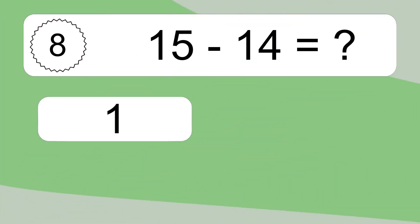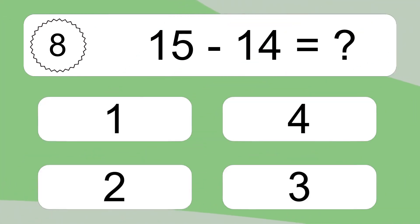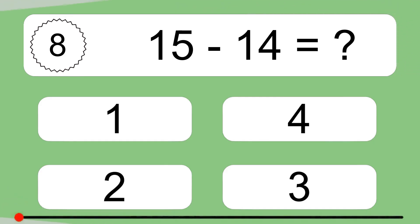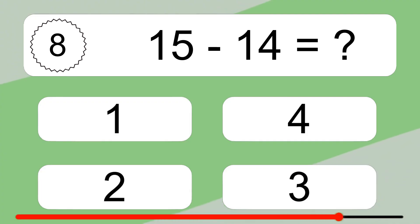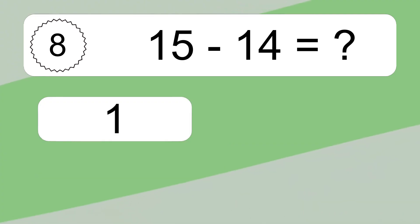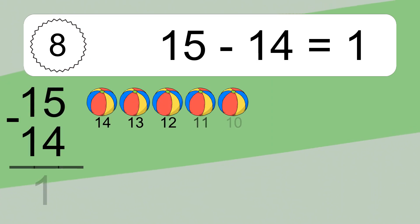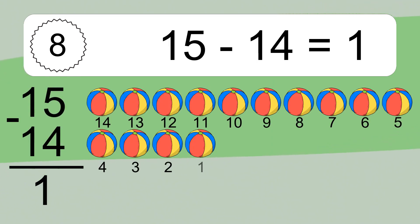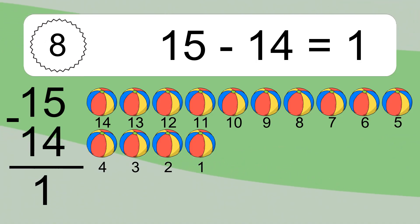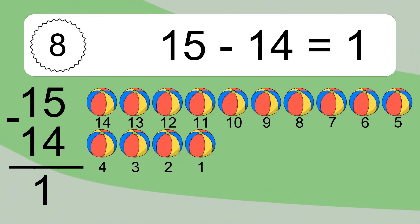15 minus 14 equals what? 15 minus 14 equals 1. Let's count it: 14, 13, 12, 11, 10, 9, 8, 7, 6, 5, 4, 3, 2, 1. 15 minus 14 equals 1.